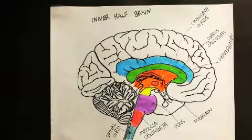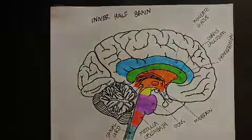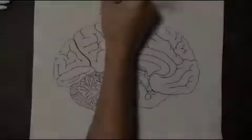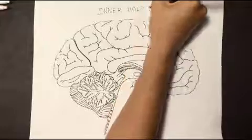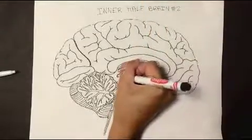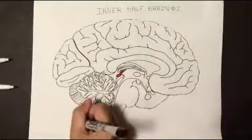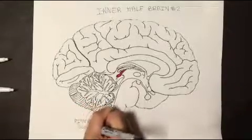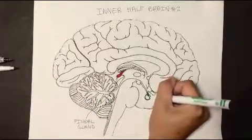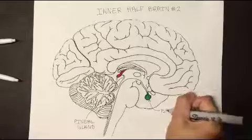This is a quick overview of some of the structures of the inner brain. For this final diagram, we will get a little more detailed as we go over some of the glands and specific inner brain structures. We will call it the inner half brain too.